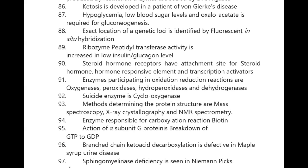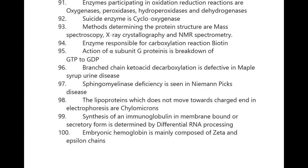Enzymes participating in oxidation-reduction reactions are oxygenases, peroxidases, hydroperoxidases, and dehydrogenases. The suicide enzyme is cyclooxygenase. Methods for determining protein structure are mass spectroscopy, X-ray crystallography, and NMR spectrometry. Enzyme responsible for carboxylation reaction is biotin. The action of alpha subunit of G proteins is breakdown of GTP to GDP.